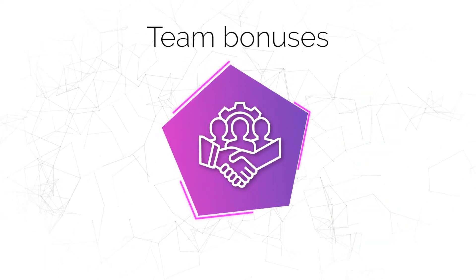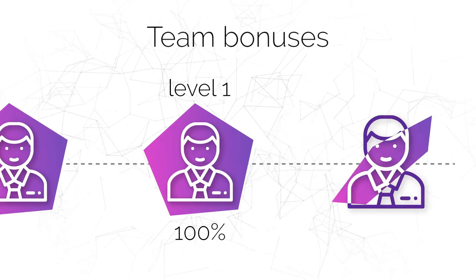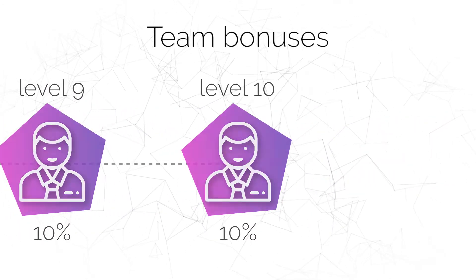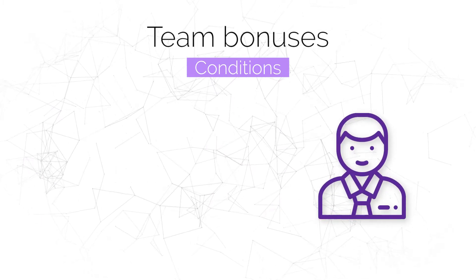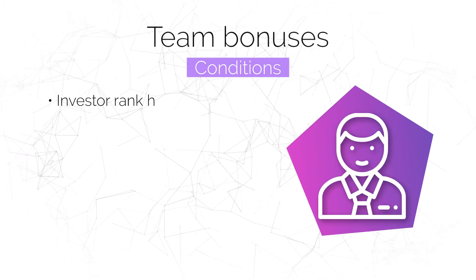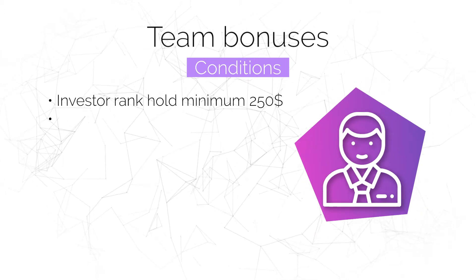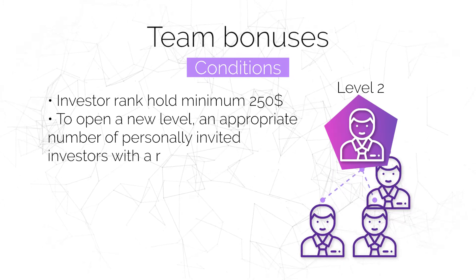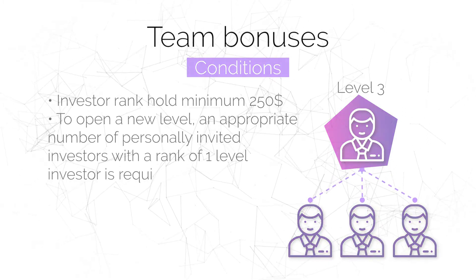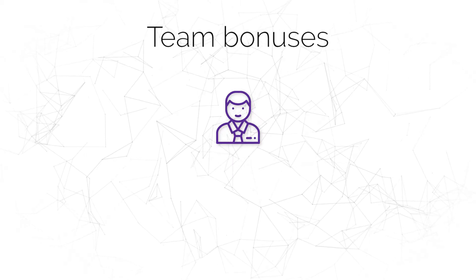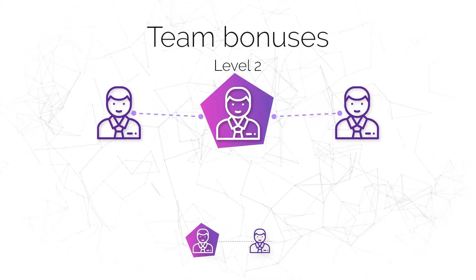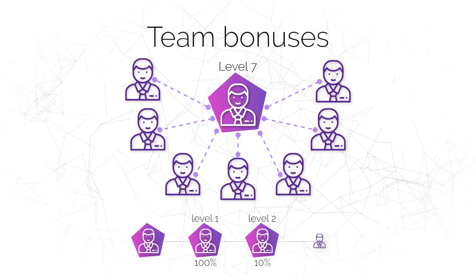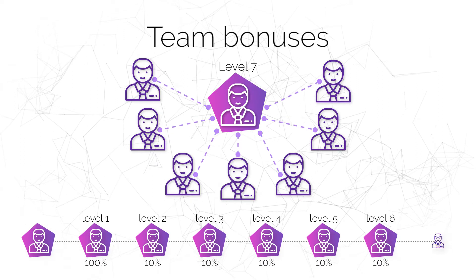Team bonuses: you get 10% of the income of your team from level 2 to level 10. Conditions: investor rank, hold minimum $250. To open a new level, an appropriate number of personally invited investors with a rank of investor is required. For example, if you have two personally invited, you receive 10% from the second level. If you have seven personally invited, you receive 10% from the second to the seventh level.